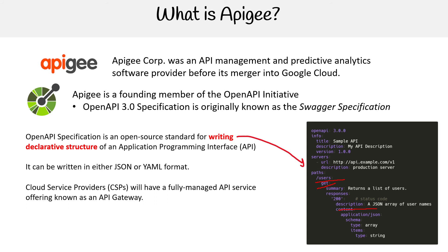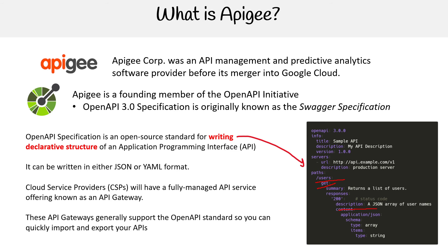CSPs will have fully managed API services known as API gateways. These API gateways generally support Open API standards, so you can quickly import or export APIs. On AWS you can use Open API 3.0 or Swagger 2.0, and the same is true for GCP and Azure — they all have these services.